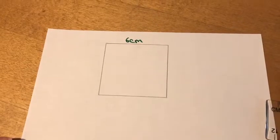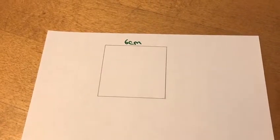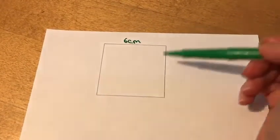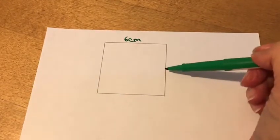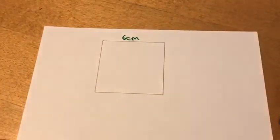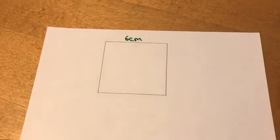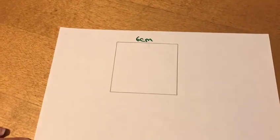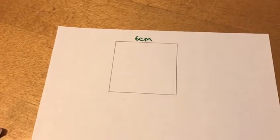So to find the perimeter, what I need to do is add up four lots, because there are four sides, four sides of six centimetres. Now you could do that by adding them all together; a much quicker way is to use your times tables knowledge and to do a multiplication.